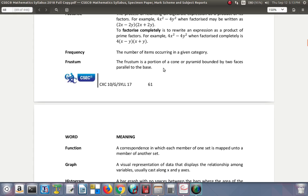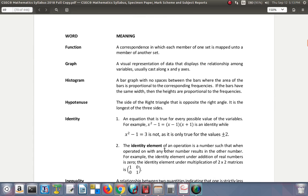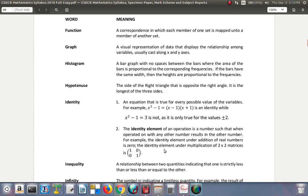Frustum: the frustum is a portion of a cone or pyramid bounded by two faces parallel to the base. You have the base, and then you cut off part of the tip of the cone parallel to the base. That's the frustum. Later on, you will meet upon the frustum of a cone and how you calculate the volume of the frustum of a cone.